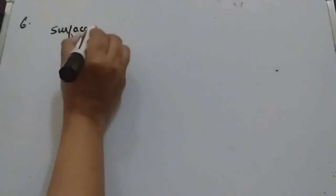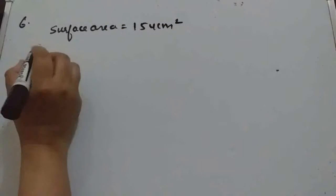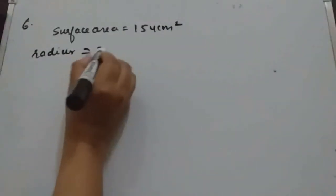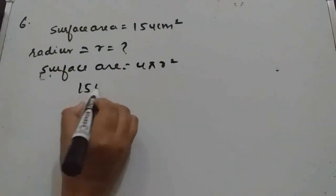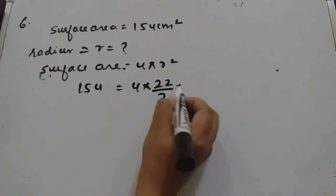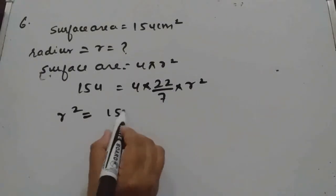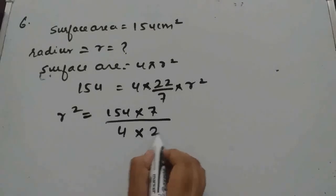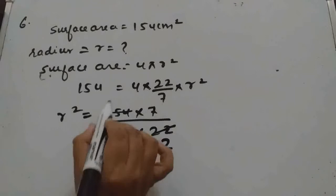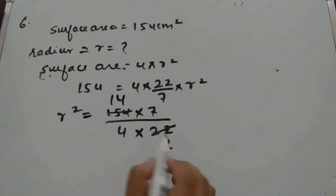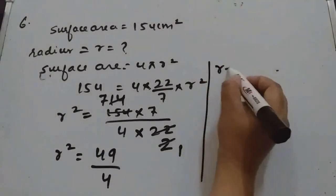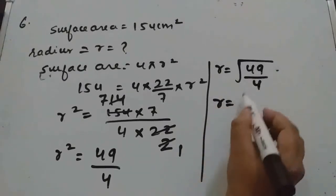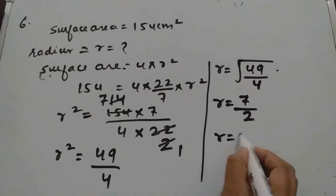Question 6: Find the radius of a sphere whose surface area is 154 cm². We know surface area = 4πr². So 154 = 4 × (22/7) × r². Solving: r² = (154 × 7)/(4 × 22) = 49/4. Therefore r = √(49/4) = 7/2 = 3.5 cm.